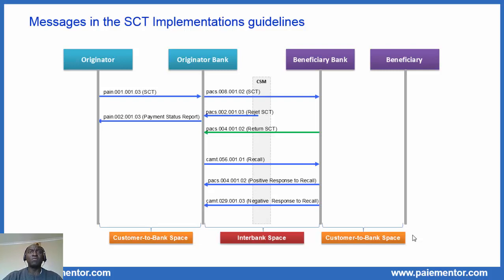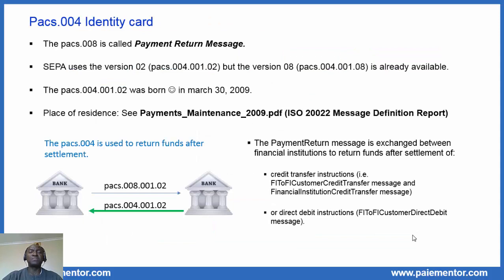Let's take a closer look at the PAX4 with the next slide, which is about the PAX4 identity card. The PAX4 is called Payment Return Message. In SEPA, version 2 of the PAX4 is used, but in ISO 20022, version 8 is already available, which means that ISO 20022 is way ahead. Many changes have been made to the PAX4 message since the version used by SEPA was published. Like the PAX8, the PAX4 message was born on March 30th, 2009 and put into its place of residence: the message definition report.